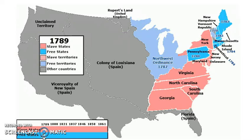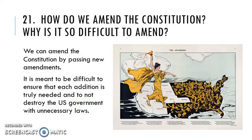A lot of people go along with it, but the areas up here resisted and said, if you're going to get slaves counting as representation, then we would like to have taxes. Question 21 is how do we amend the Constitution, and why is it so difficult to amend? We amend it by passing new amendments — there are 27 amendments, so it's 27 times that we've formally amended the Constitution.